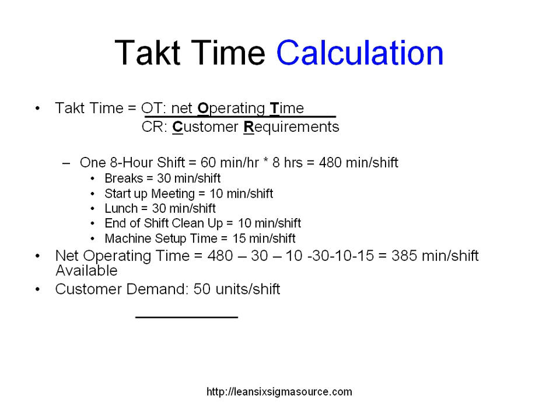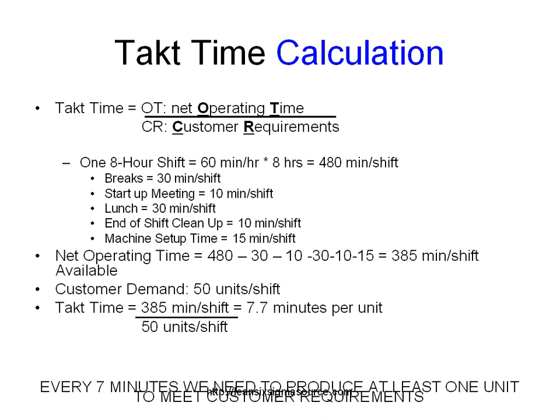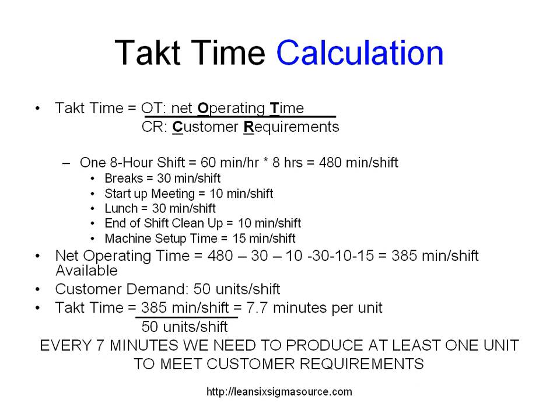Now let's say our customer demand is for 50 units. So what is our Takt time? Takt time equals 385 minutes over 50 units, which equals 7.7 minutes per unit. So what does that really mean? That's your pace — every seven minutes you need to produce at least one unit to meet customer requirements. That is your pace.